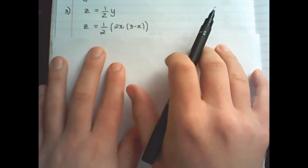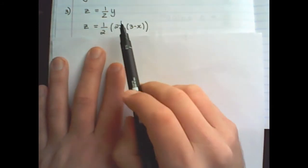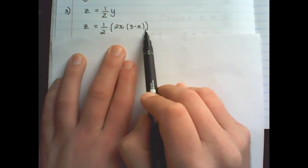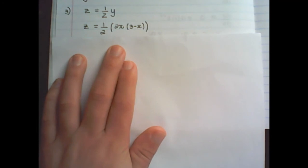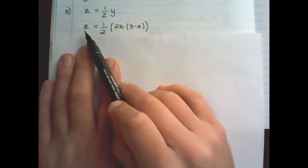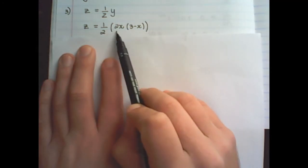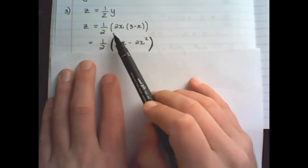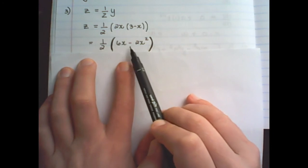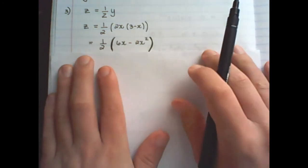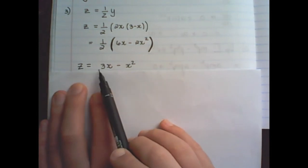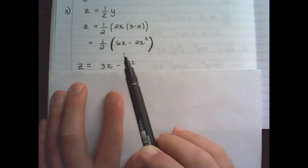And I'm finding z in terms of x. Now I multiply out, so it is 6x minus 2x squared. And if I simplify, I have z is equal to 3x minus x squared.